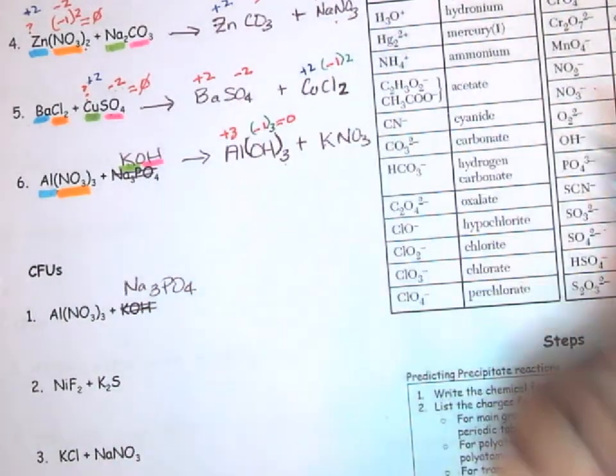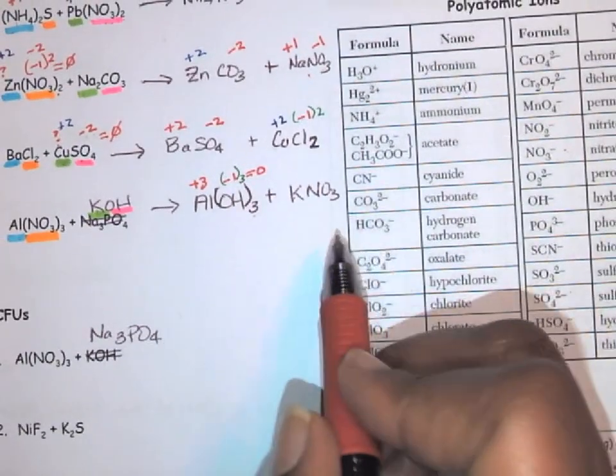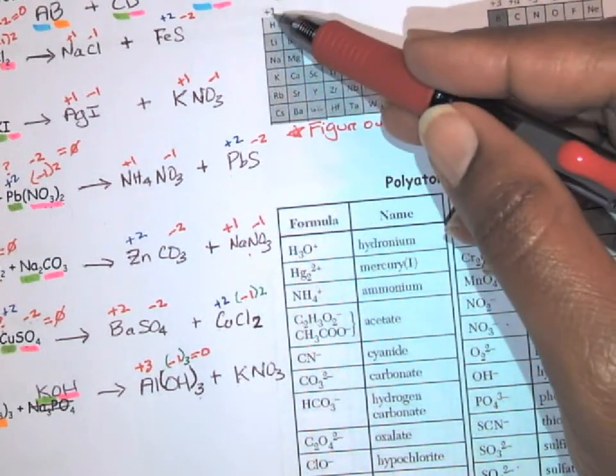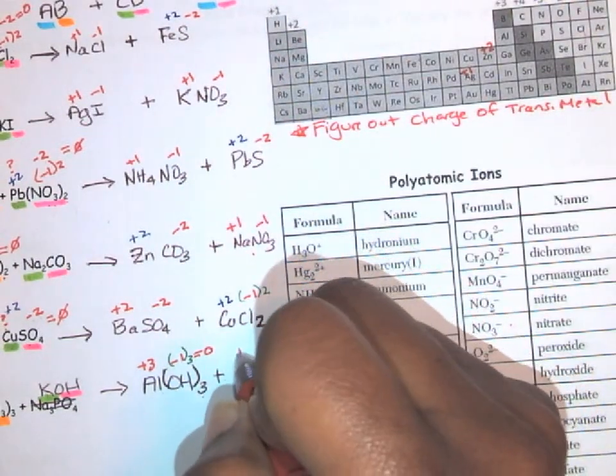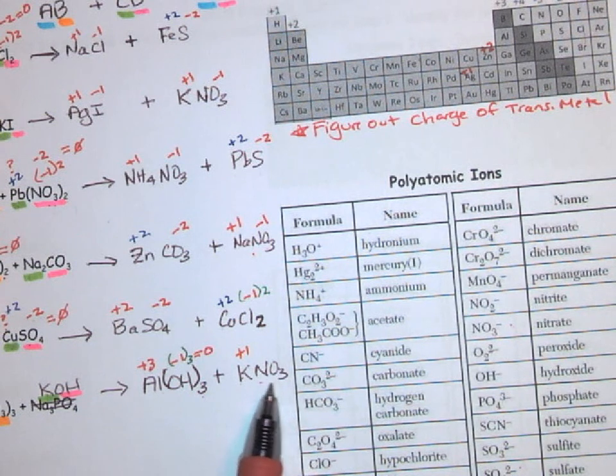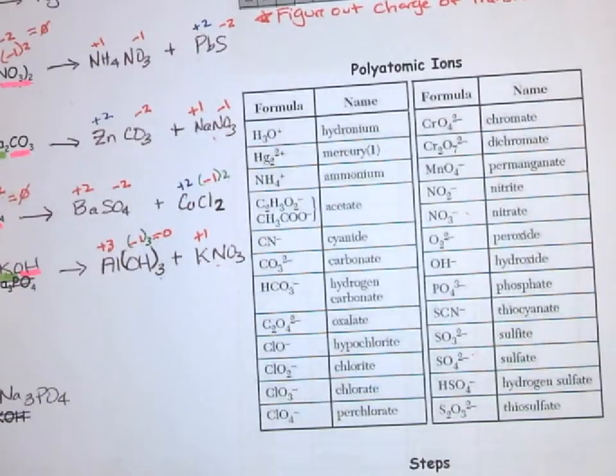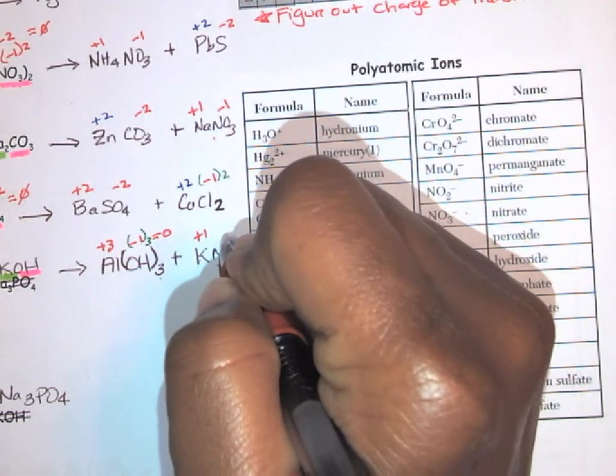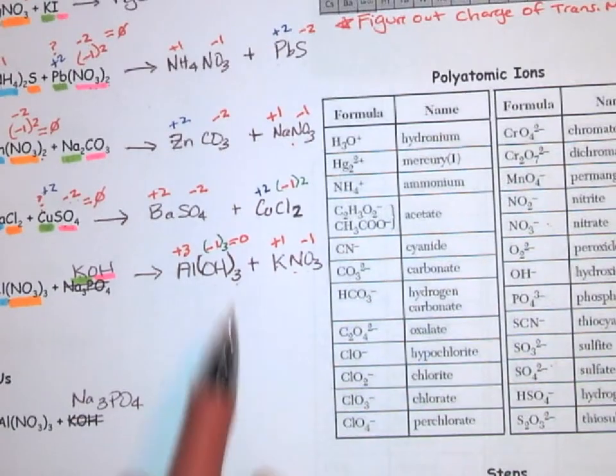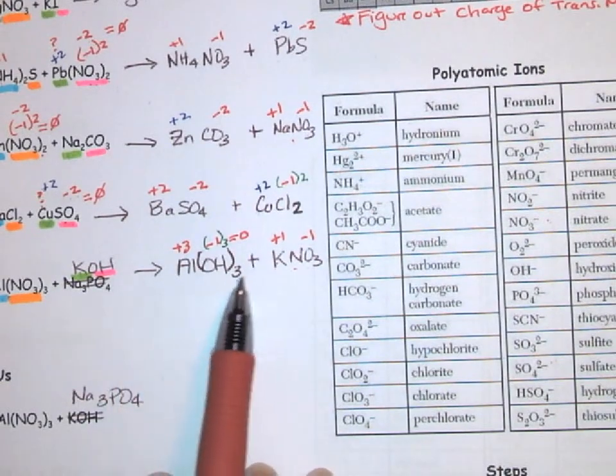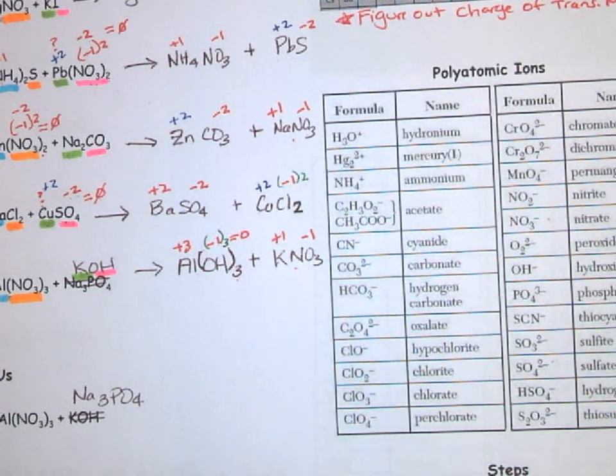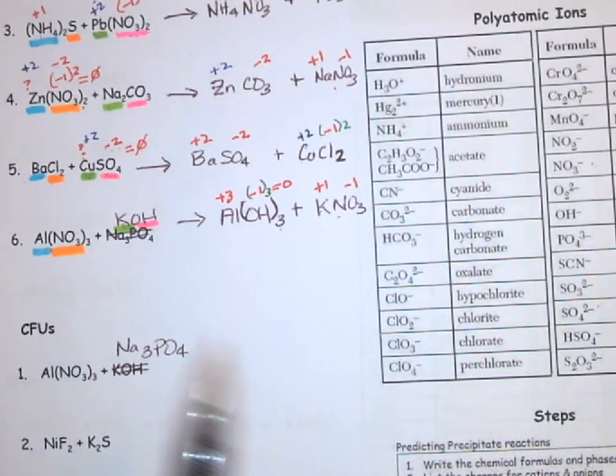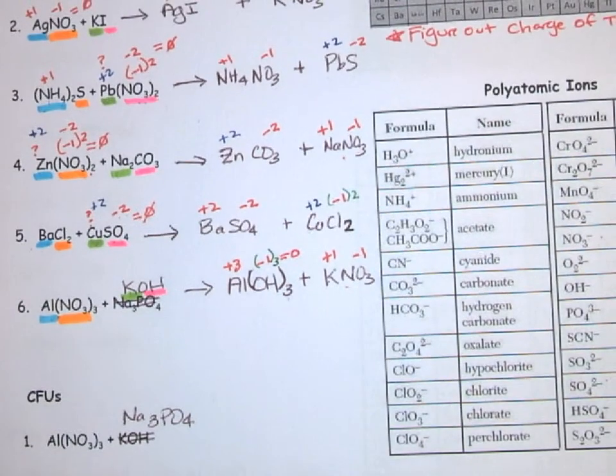Now we're going to go ahead and do the same thing for potassium nitrate. Potassium K is in group one, it has a plus one charge, so that's plus one. Nitrate is a polyatomic so you got to look in the table for the polyatomics. It has a minus one. All right, so now we have the correct formula for this. We didn't have to do anything with this. KNO3, perfect.